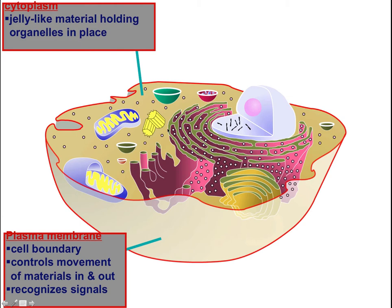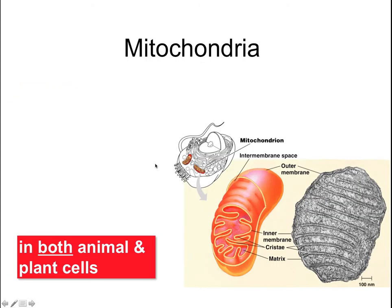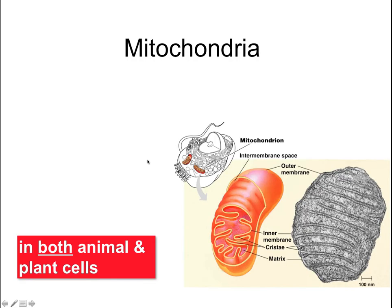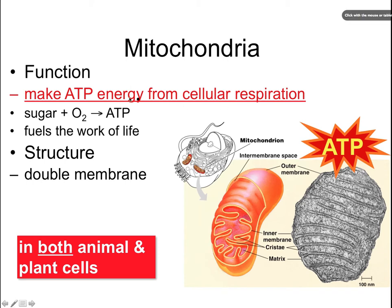This is for an animal cell, and the same thing would be true for a plant cell — a plant cell still has the plasma membrane and cytoplasm in the middle. We're not going to talk about every single organelle, but I want to talk about a couple of the important ones. Probably the most important one other than the nucleus would be the mitochondria. The function of mitochondria is to make energy — ATP — from cellular respiration.